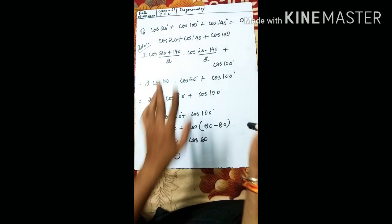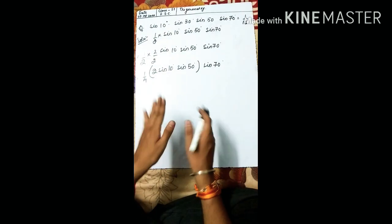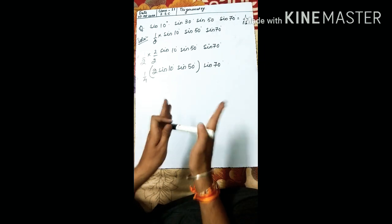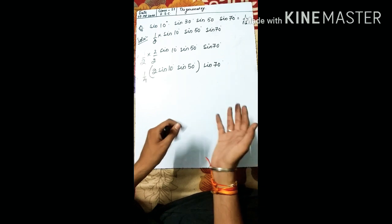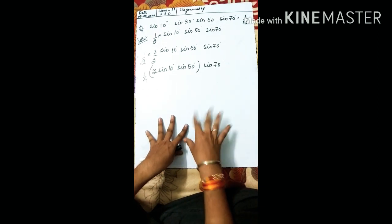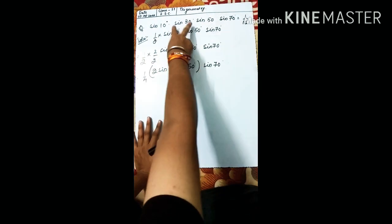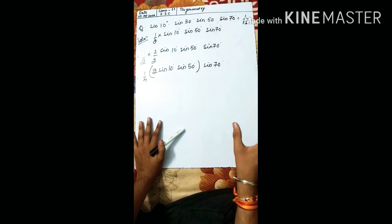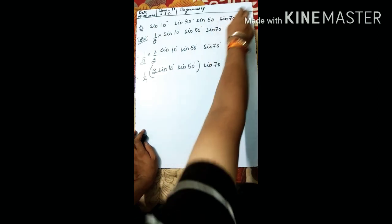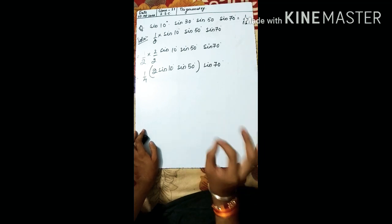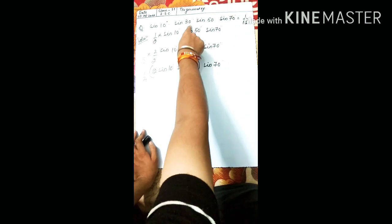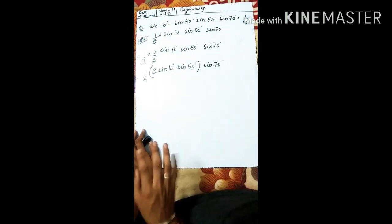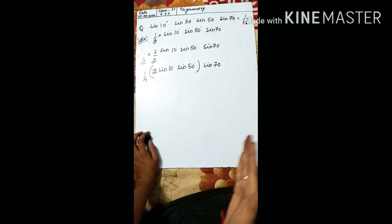Now a very important type of question frequently asked in exams — there are about 5 to 6 questions of this kind, so understand this one and you can handle all the rest. The question: sin10° · sin30° · sin50° · sin70° = 1/16. First, sin30° = 1/2, so substitute that value directly.